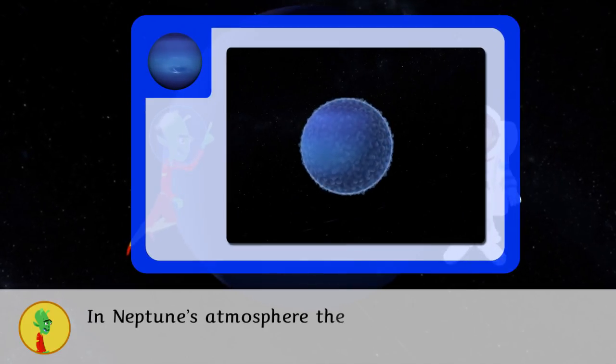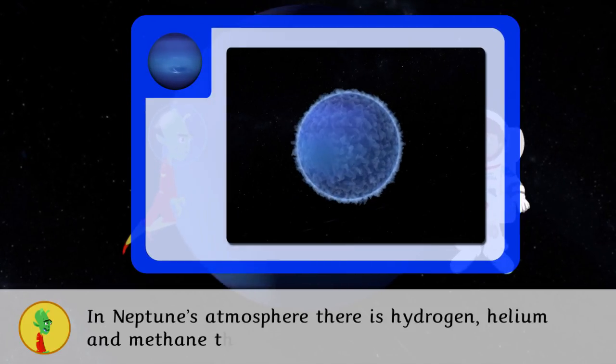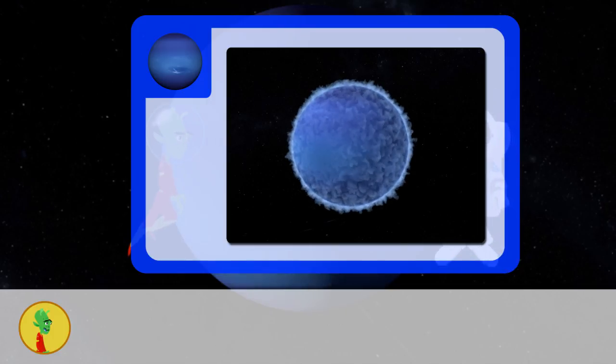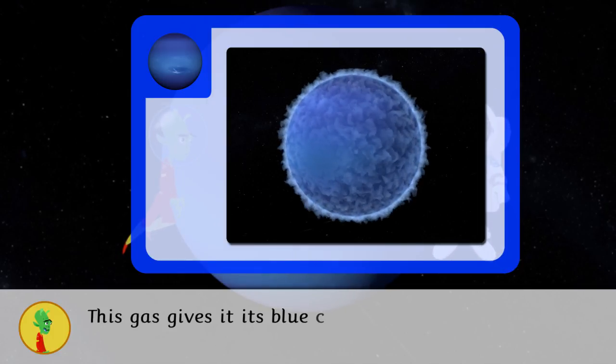In Neptune's atmosphere, there is hydrogen, helium and methane that can be used as fuel. This gas gives it its blue color.